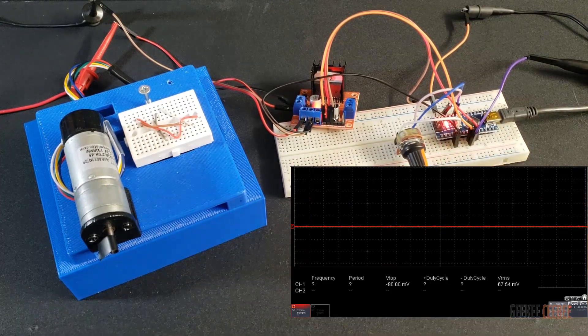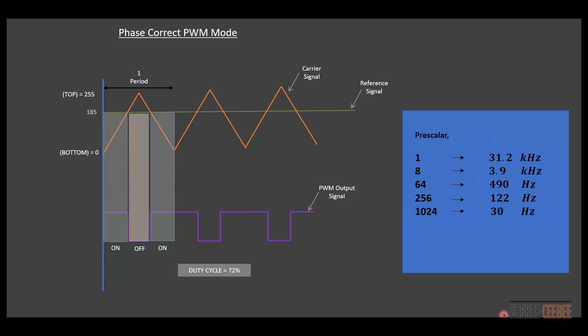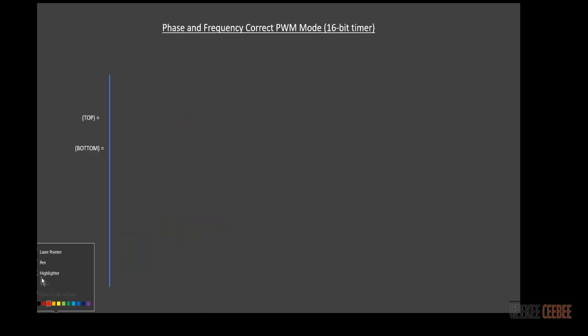The limitation of this PWM mode is that there are only five prescaler values, giving only five possible higher frequency outputs. In our second example, we'll see how to get a custom higher frequency.